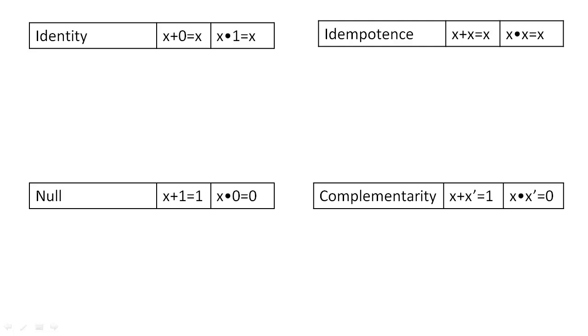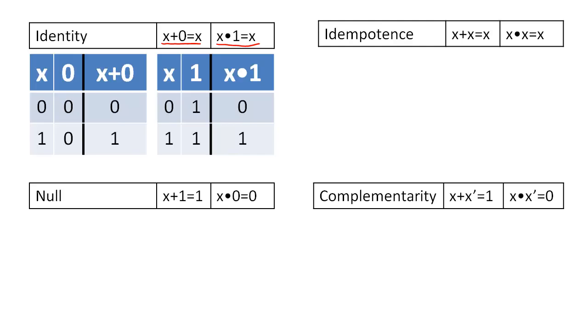Each of these identities appears in two forms, one based on the OR operation and one based on the AND operation. These truth tables here can be used to prove these identities.